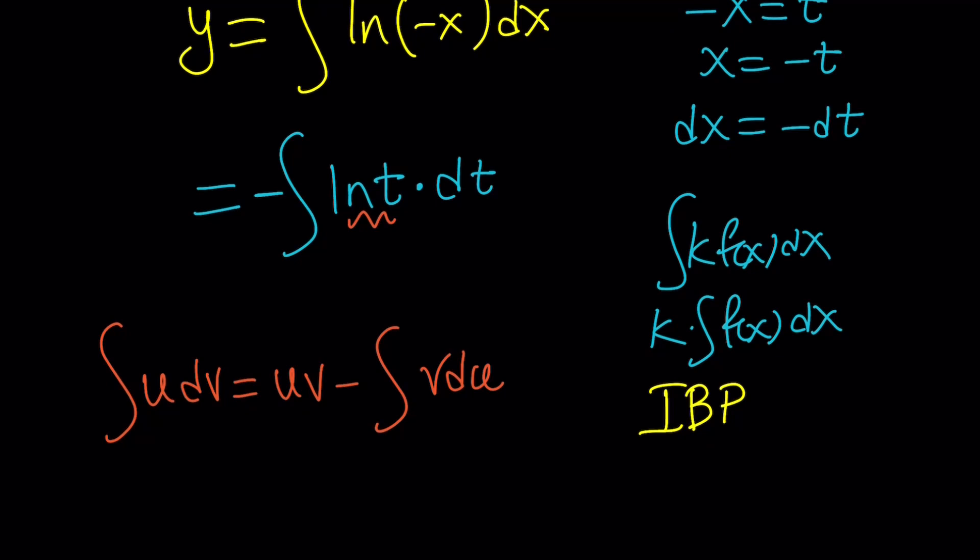if something is easy to differentiate, call that U. And if something is easy to integrate, call that DV most of the time. There are some exceptions to this. But in this case,